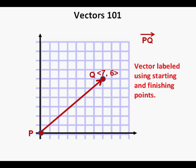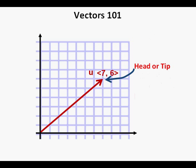Alternatively, vectors can be labeled by the starting and finishing point letters with a little arrow on top of the letters. This is the same vector as u but labeled vector PQ. The ends of the vector have names. The finishing point of a vector is called the head or tip of the vector, and the starting point is called the tail of the vector.